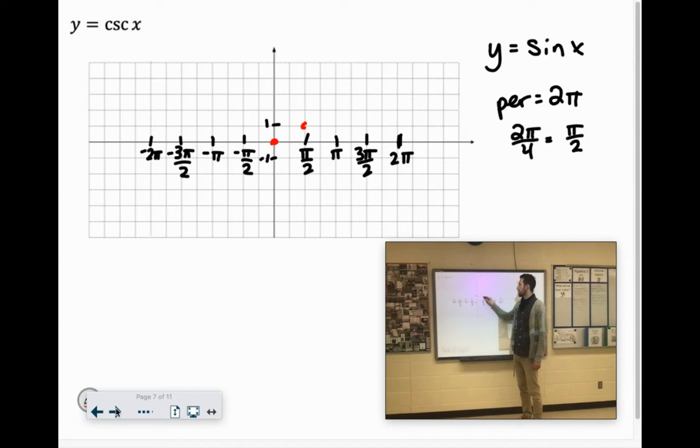Then it goes to our maximum, then to the middle, then the minimum, then the middle. So if we kind of go backwards with it, middle, maximum, middle, there would be two cycles of sine.